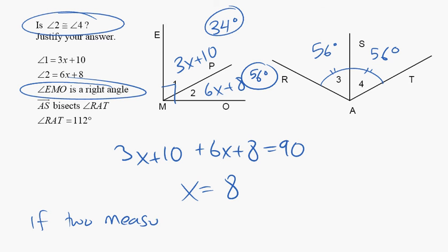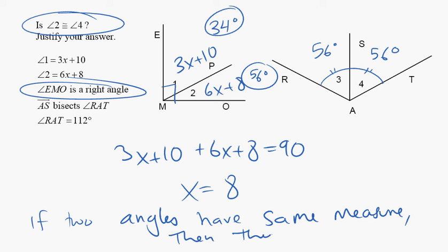If two angles have the same measure, then they are congruent. Go ahead, write down your big idea for this one.